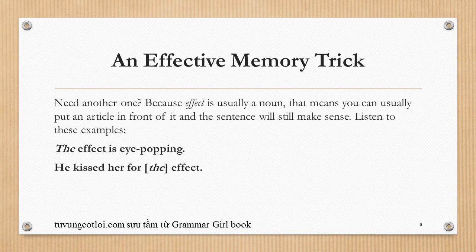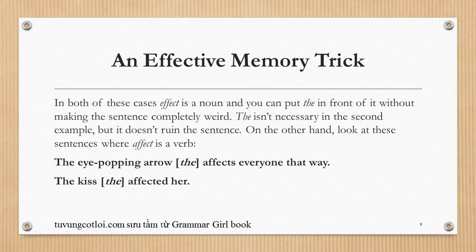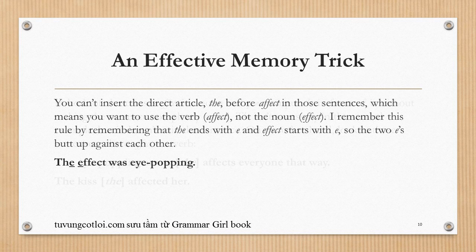Here's another memory trick: because effect is usually a noun, you can usually put an article in front of it and the sentence will still make sense. For example, 'the effect is eye-popping' or 'he kissed her for the effect' — in both cases effect is a noun and you can put 'the' in front of it. On the other hand, in sentences where affect is a verb — 'the eye-popping arrow affects everyone that way,' 'the kiss affected her' — you can't insert the article 'the' before affect. I remember this rule by noting that 'the' ends with E and 'effect' starts with E, so the two E's butt up against each other: 'the effect was eye-popping.'